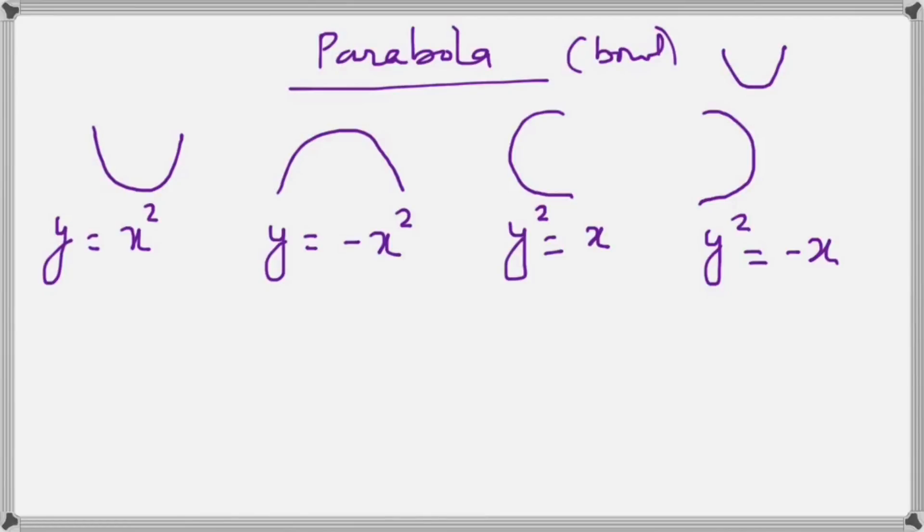Next is circle. In a circle the power of x and y both are 2 and their coefficients are equal. So we have something like x² + y² = r². You can see that x and y both have the power 2 and their coefficients are equal.